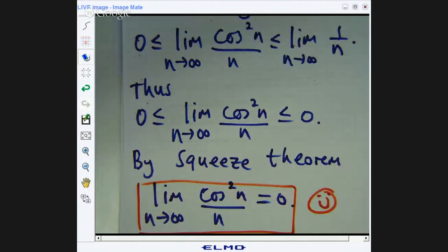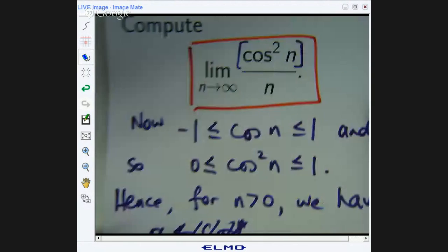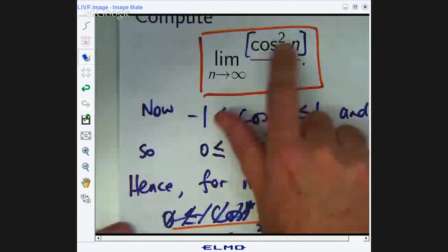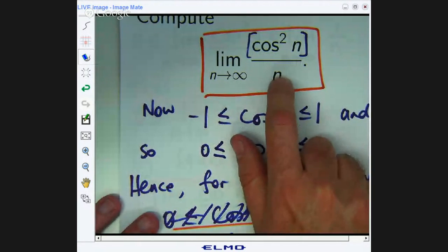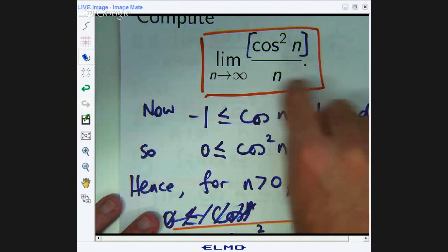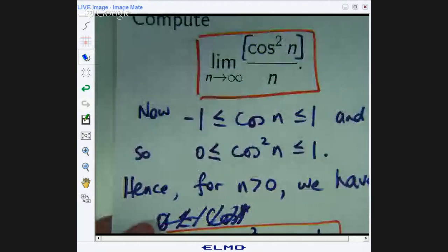So in other words, our intuition was correct. When we looked at this, originally we thought, okay, cos squared doesn't vary much. One on n, as n gets large and positive, this may drag the whole sequence down towards zero. And that's actually what happened.